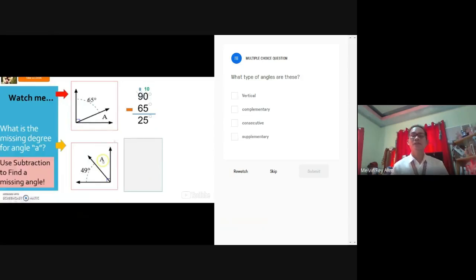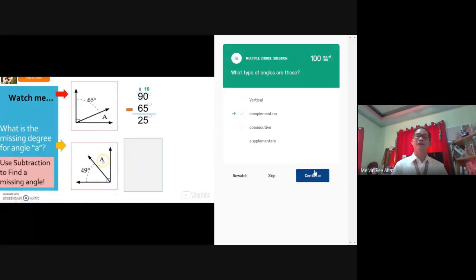So the first question is, what types of angles are these? So you have there the choices, vertical, complementary, consecutive, supplementary. Your answer is, okay, complementary, then we need to submit it. There we go. So your score is 100 out of 100, so therefore it's checked. So let's click continue.